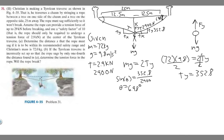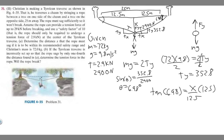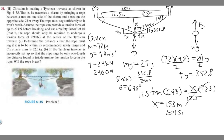Now we can solve for x. We know tangent of 6.98 degrees equals opposite over adjacent, which is x over 12.5. Multiply both sides by 12.5, and x equals 1.53 meters. We're working in meters, so the answer to Part A is 1.53 meters — you can round to 1.5 meters if you prefer.